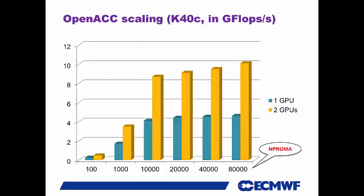Results in gigaflops per second: the gray one is one GPU and the yellow one is two GPUs. Haswell with 24 cores was around 16 to 17 gigaflops. So we are a little bit behind even with two GPUs. N-proma really has to be massive — we get almost no performance when N-proma is 100, and similarly for 1,000. We really have to start at somewhere around 10,000 or so.